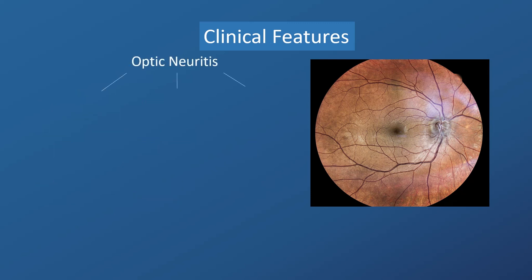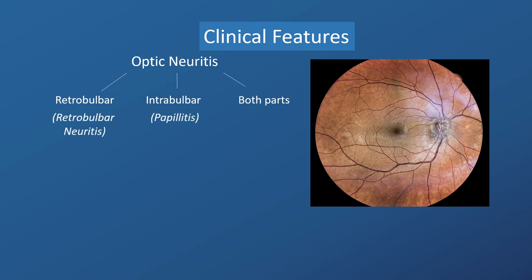Optic neuritis may involve the retrobulbar or the intrabulbar portion of the optic nerve, or both. The former is called retrobulbar neuritis, and the latter is known as papillitis. In papillitis, you may find papilledema as well.